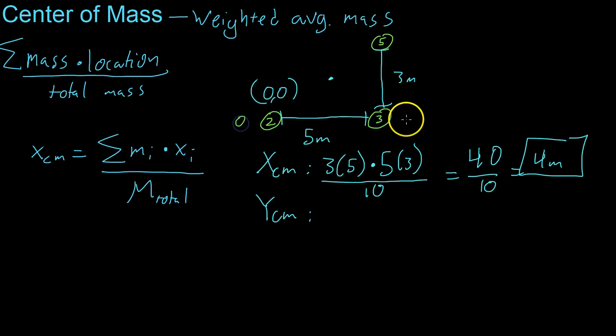Both of these are at y equals zero, so the only mass you have to take into account is the five kilogram mass, which is at height three, divided by 10, which means that you have 15 over 10, or 1.5 meters. So, in this coordinate system, you get that the center of mass is at the point four, 1.5.